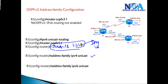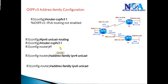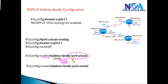Parameters you want applied commonly to both IPv4 and IPv6 — such as router ID or authentication — can be applied without entering the address family. If you want configurations applied only to IPv4, you enter 'address-family ipv4 unicast' and then apply commands inside that address family mode.